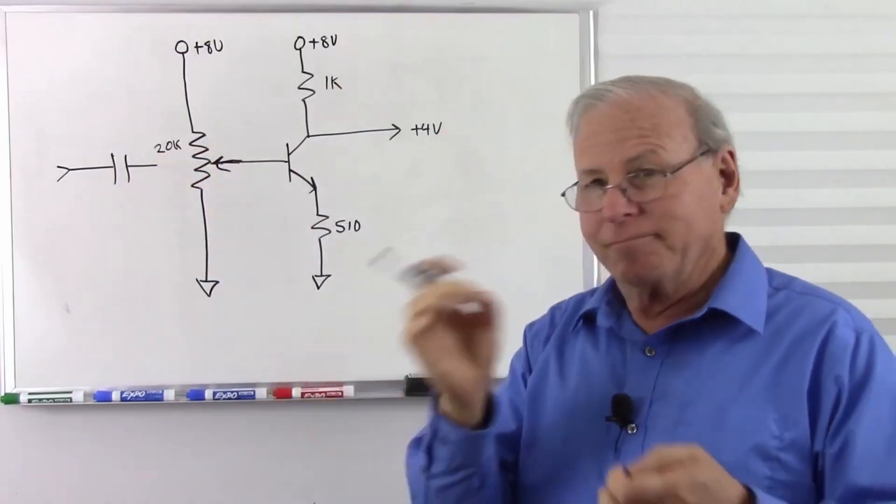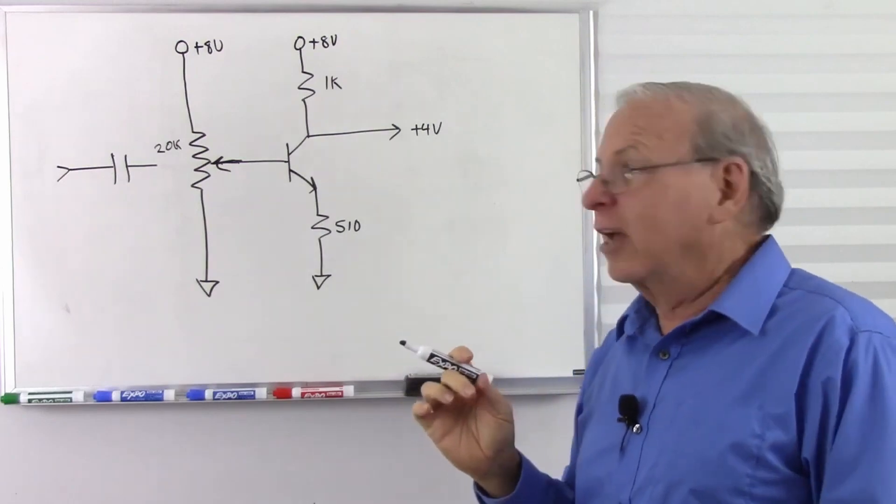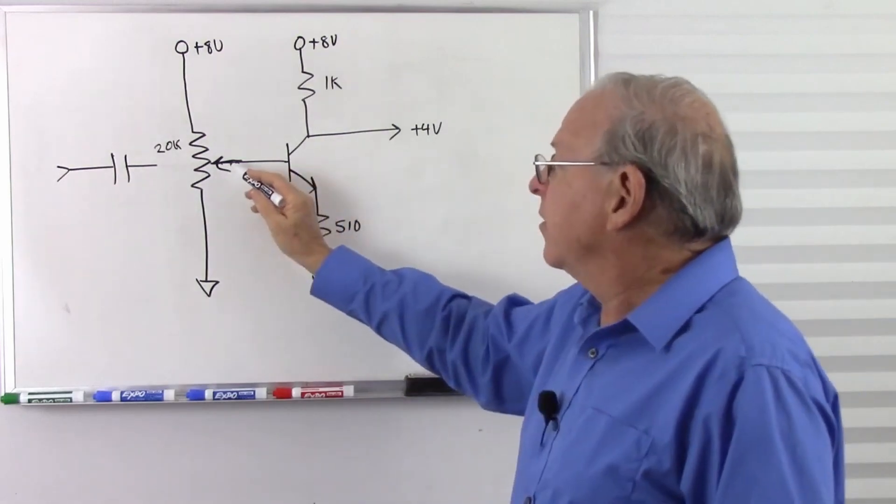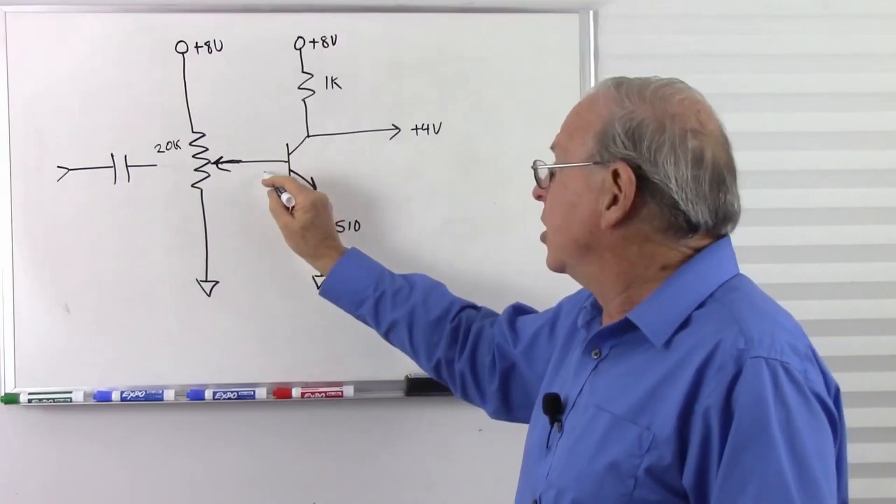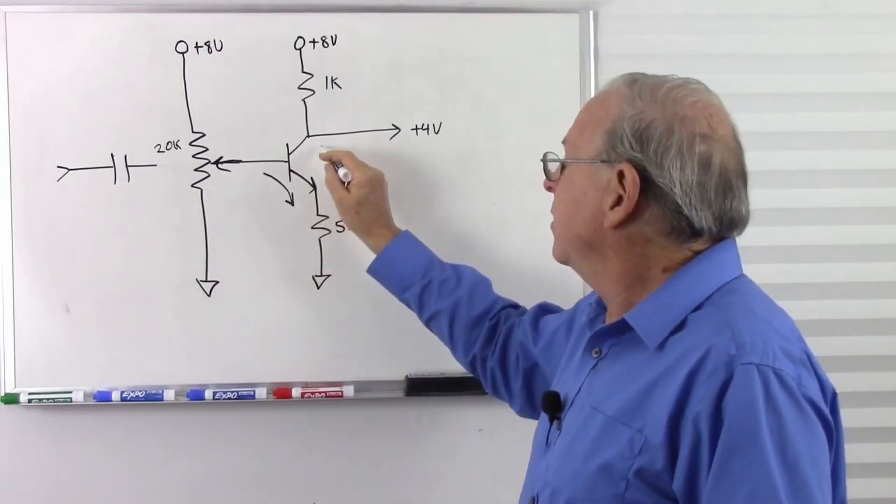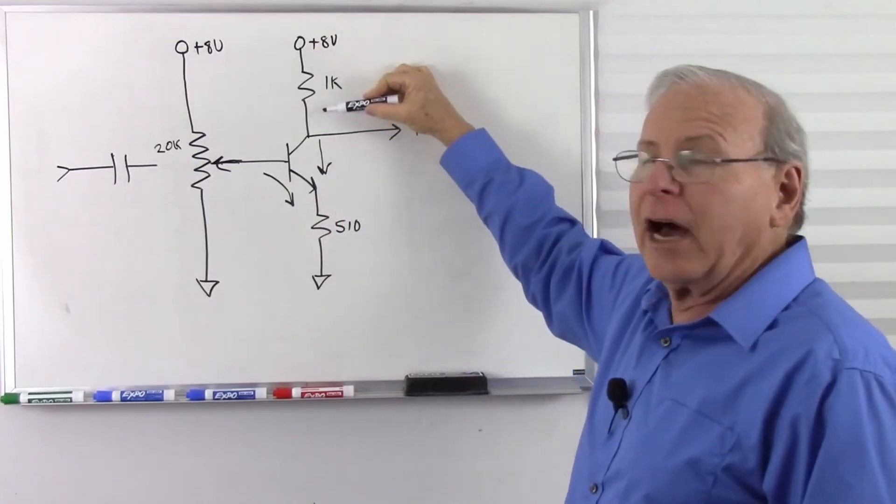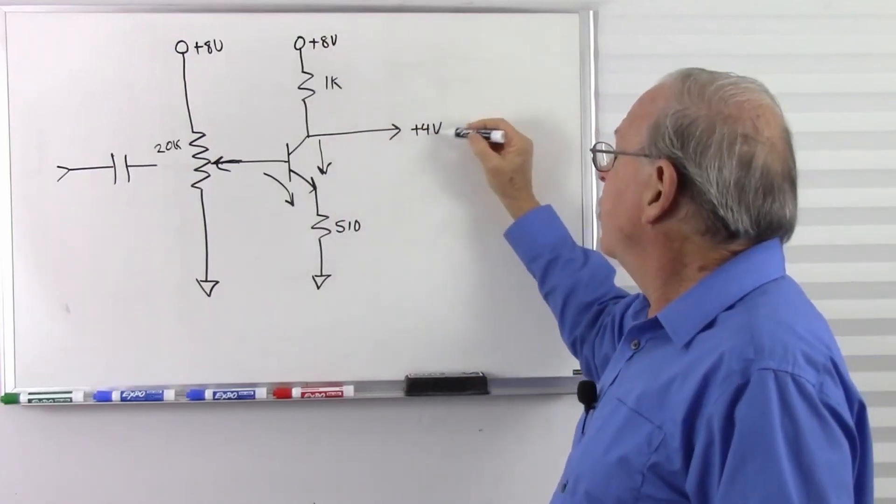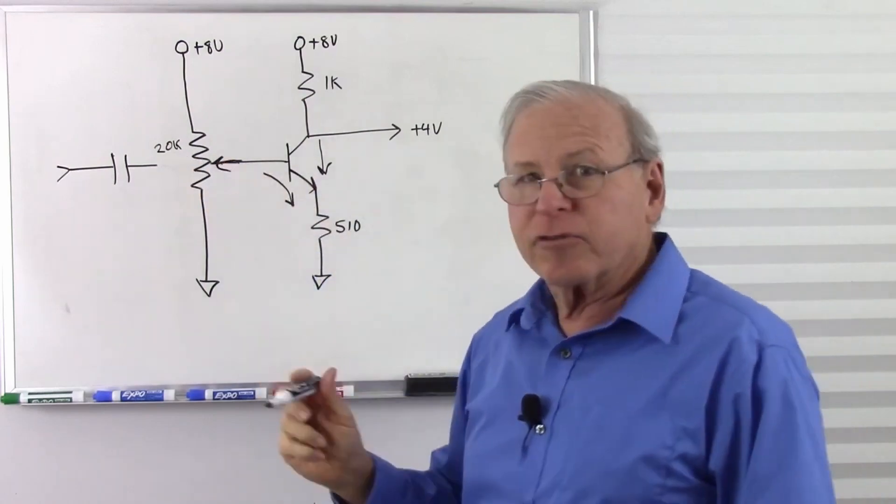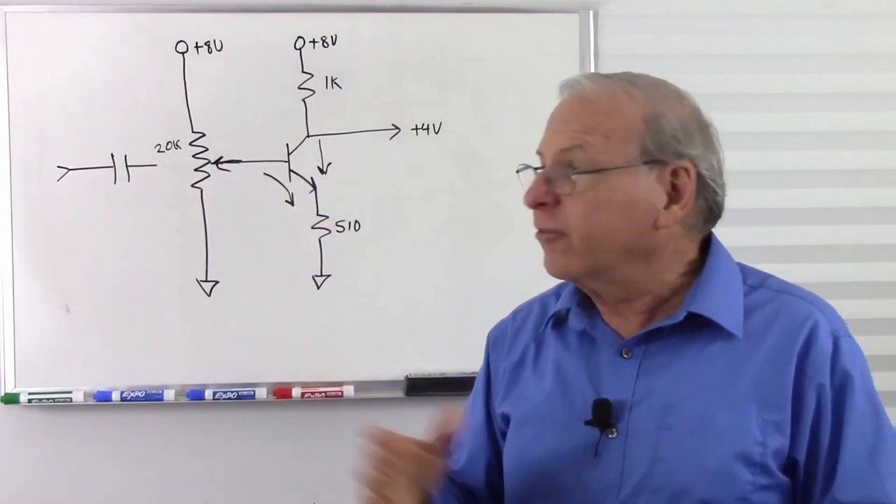And then I adjusted that up and down until I got just the right base current to get just the right collector current that it pulled this voltage down just right to 4 volts. Now I have those resistors where I want them and as you asked, did you just measure that with an ohmmeter? That's exactly what I did.